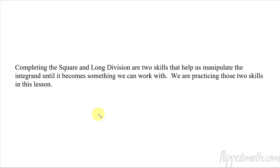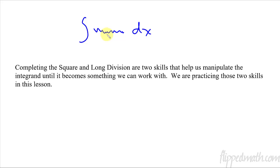So why are we going to do this? It's because it helps us with the integrand — the thing before the dx, what we're going to take the antiderivative of. Sometimes we aren't able to integrate it directly, so completing the square and doing polynomial long division helps us manipulate it until it becomes something we can work with. That's the point of this lesson.